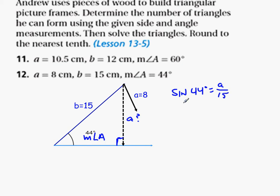So if I multiply both sides of the equation by 15, then these would cancel, and I would be left with 15 times the sine of 44 degrees equals a. So let's use our calculator and find out what that is.